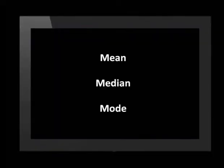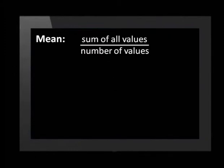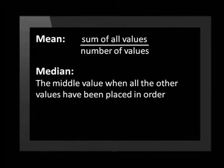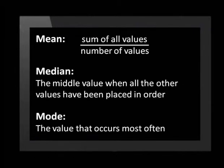You'll remember that there are three types of averages we can work with. First is the mean — an average calculated by adding up all the data and then dividing the total by the number of values you have. The median is the number that falls exactly in the middle of the data when organized from largest to smallest. And the mode is the value that occurs most often.